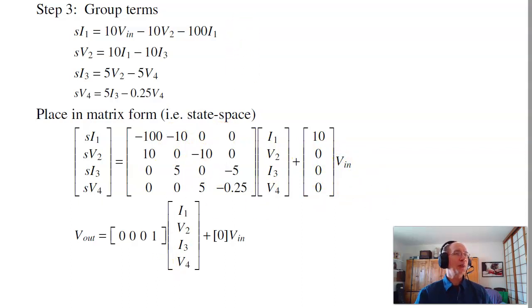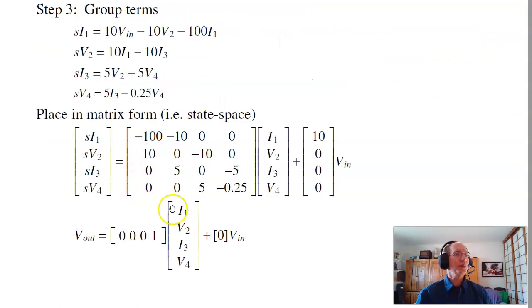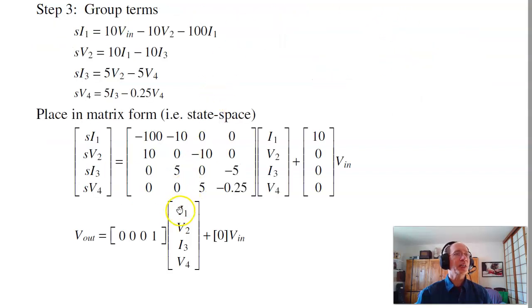The output depends upon what you're measuring. In this case, my output is just v4, so of those four states I want to pick off v4. This could depend on what you're measuring — if I want to measure v2, it would be [0, 1, 0, 0]. If I want to measure the voltage across the inductor, it'd be v2 minus v4, so [0, 1, 0, -1]. The C matrix says: where did you put the oscilloscope probe? What are you measuring? So now I have A, B, C, D.